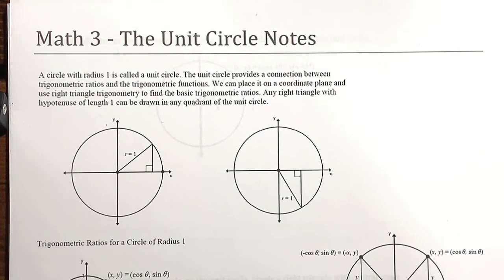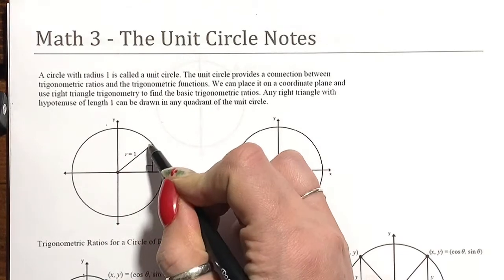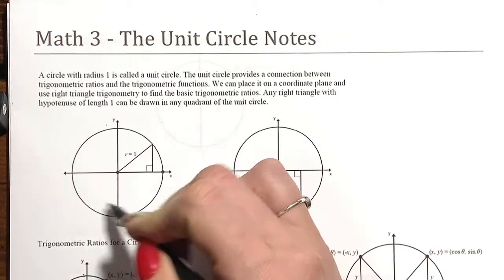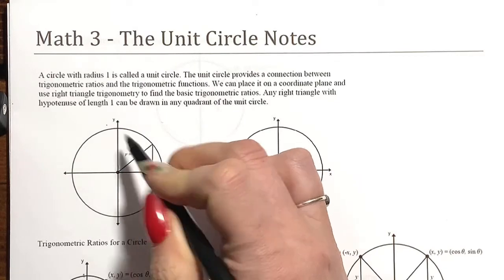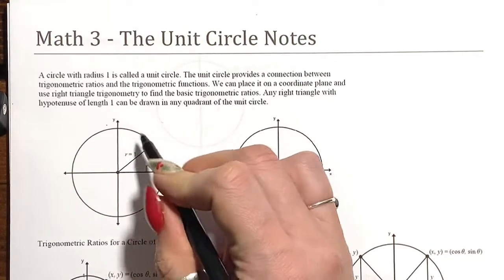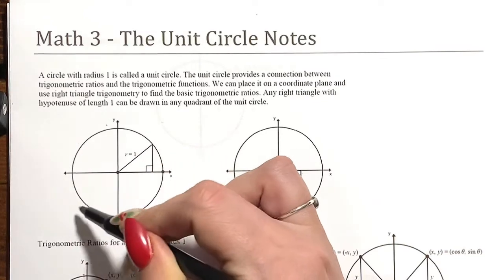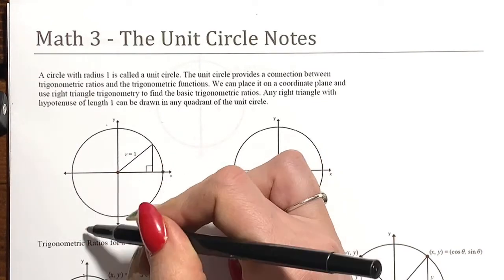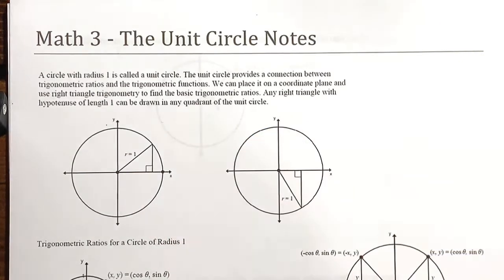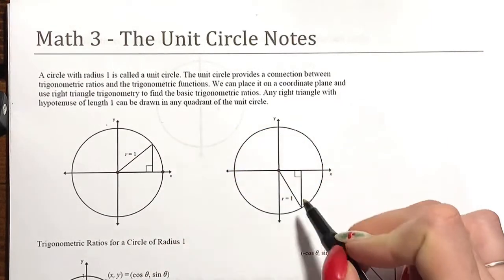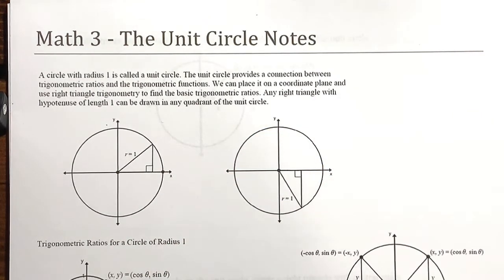Any right triangle with a hypotenuse of one can be drawn in any quadrant of the unit circle. Remember, if we have our axes, quadrant one is the top right, quadrant two is the top left, quadrant three is the bottom left, and quadrant four is the bottom right. So if we have these little right triangles that we draw, we can combine the right triangle trig from section 5.1 to help us create this unit circle.